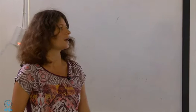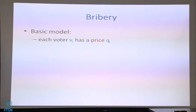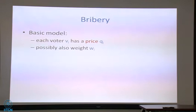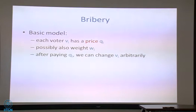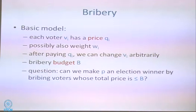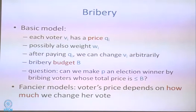Now let me talk about bribery. The basic model: we have voters and each vote has a price. Some voters are unbribeable — price is infinity. Some are easy to bribe, some you can bribe for free. Prices range from zero to plus infinity inclusive. Voters potentially also have weights, so like before we can have weighted and unweighted cases. In the basic model, after paying the price of a voter, we can change their vote arbitrarily. We have a bribery budget B, and our goal is to make a preferred candidate an election winner by bribing voters whose total price is at most B. This basic model was introduced in a paper by Faliszewski, Hemaspaandra, and Hemaspaandra — the journal version came out around 2007.